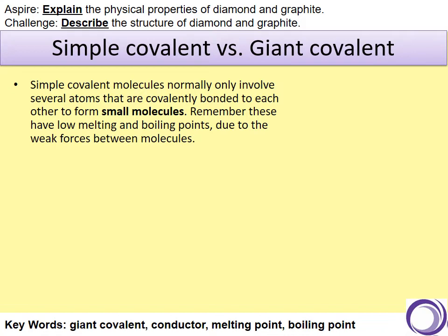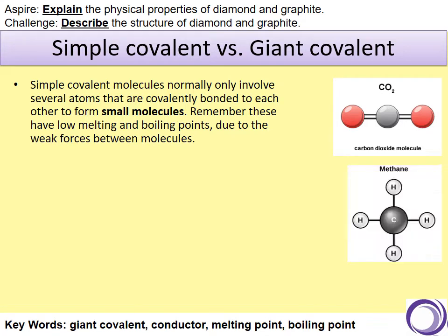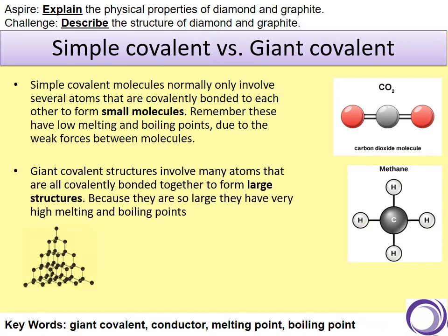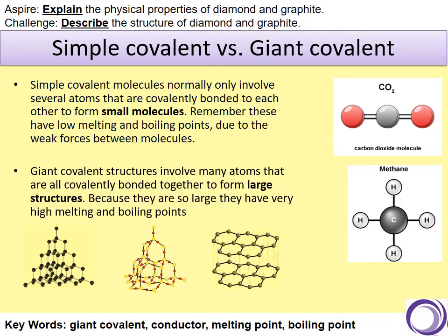Previously we have looked at simple covalent molecules and they normally only involve several atoms. These are small molecules and they have low melting and boiling points because they only have weak forces between the molecules. Carbon dioxide is an example of this, as is methane. But in today's lesson we're going to look at giant covalent structures, which involve many atoms that are covalently bonded together to form large structures, and because they are so large they have very high melting and boiling points. Examples of these are diamond, silicon dioxide — commonly known as sand — and graphite.